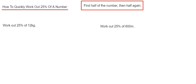So the method we're going to do is shown in the red box. All you have to do is half the number, then half again. This is the same as dividing by 2 and then dividing by 2 again. So let's have a look at the two examples here.